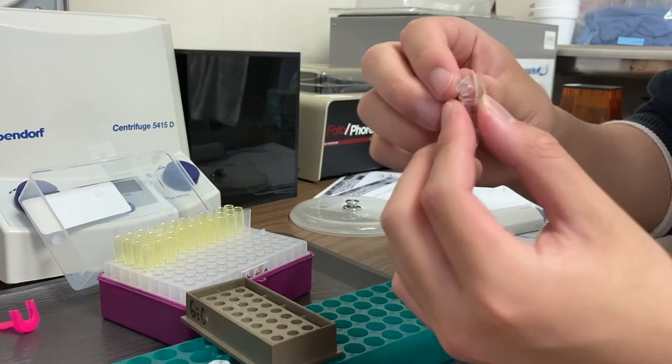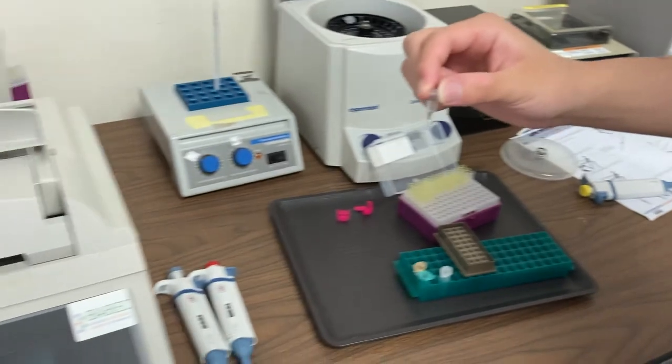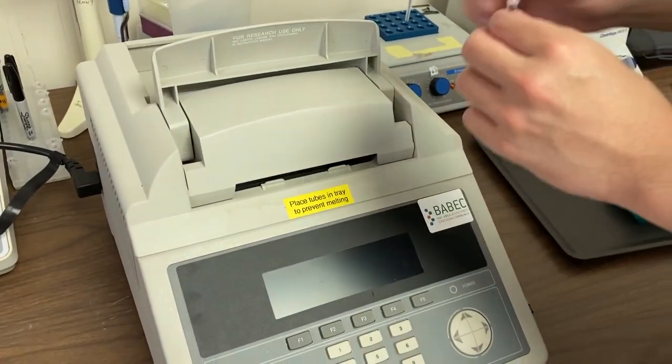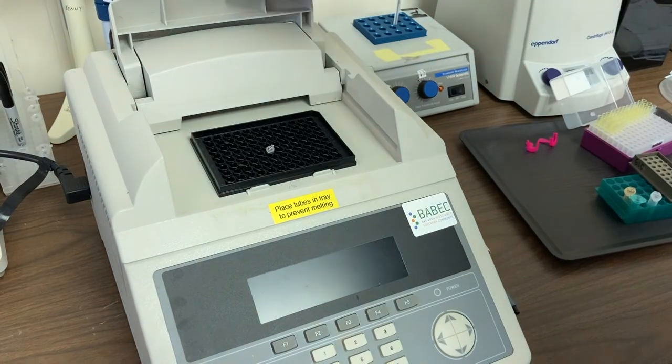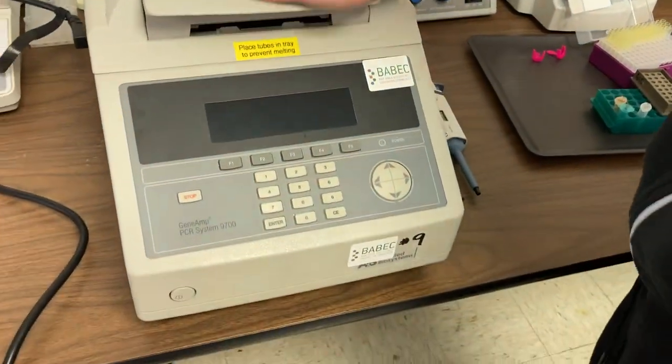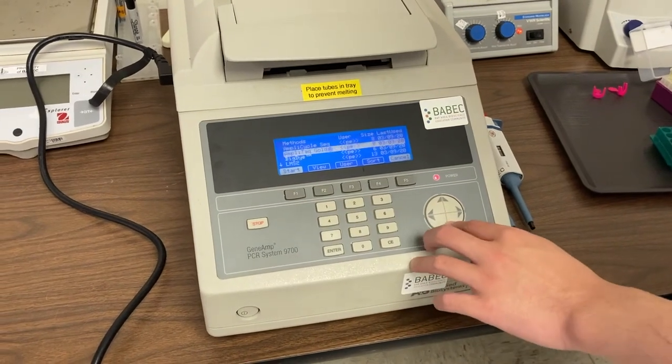And now your reaction is ready for the thermal cycler. The thermal cycler is the machine where the polymerase chain reaction, or PCR, takes place. You may have read in the reading that the thermal cycler can increase its temperature very quickly to a specific temperature. It can also cool down very quickly to a specific temperature.